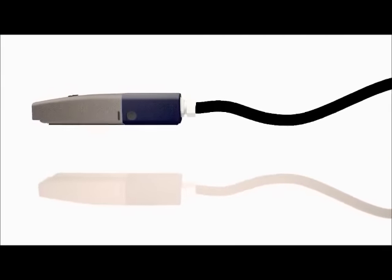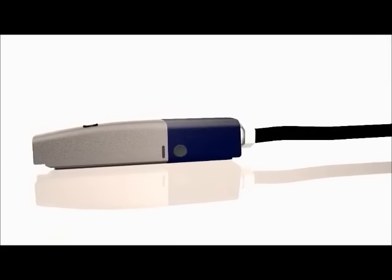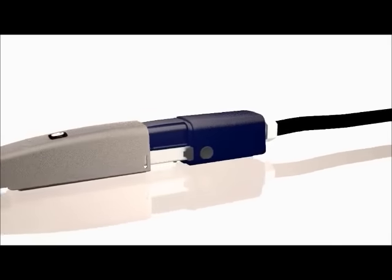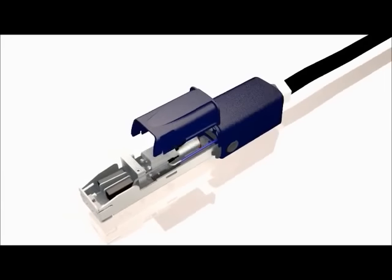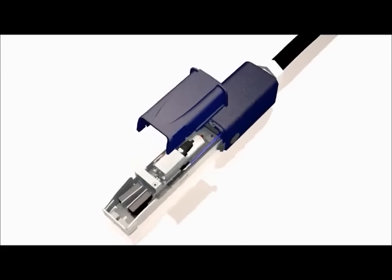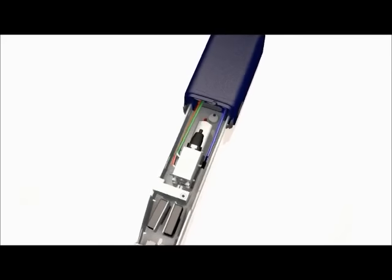This is a continuous inkjet printhead, so called because whilst the printhead is running, there is a continuous stream of ink running through the printhead. The printhead covers are coming off now to expose the working parts and we are going to focus in on the part called the gun body which is where the ink stream starts from.